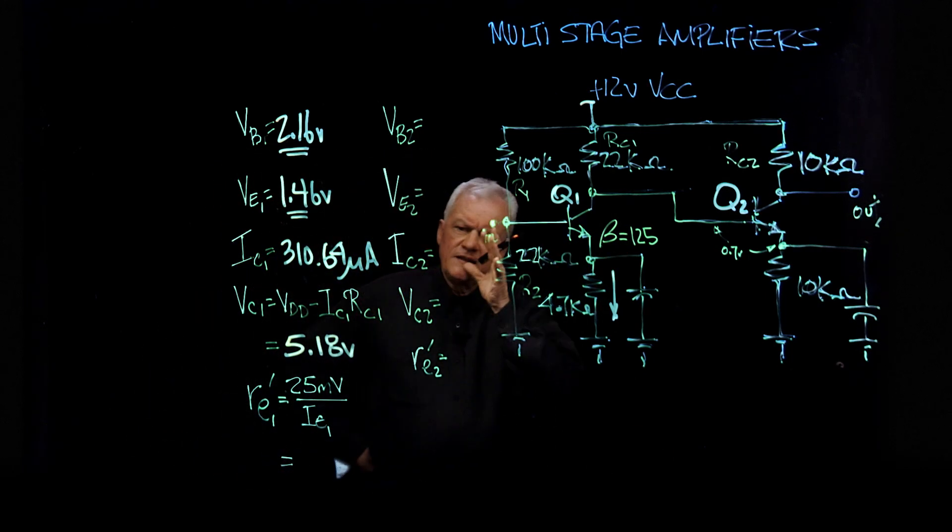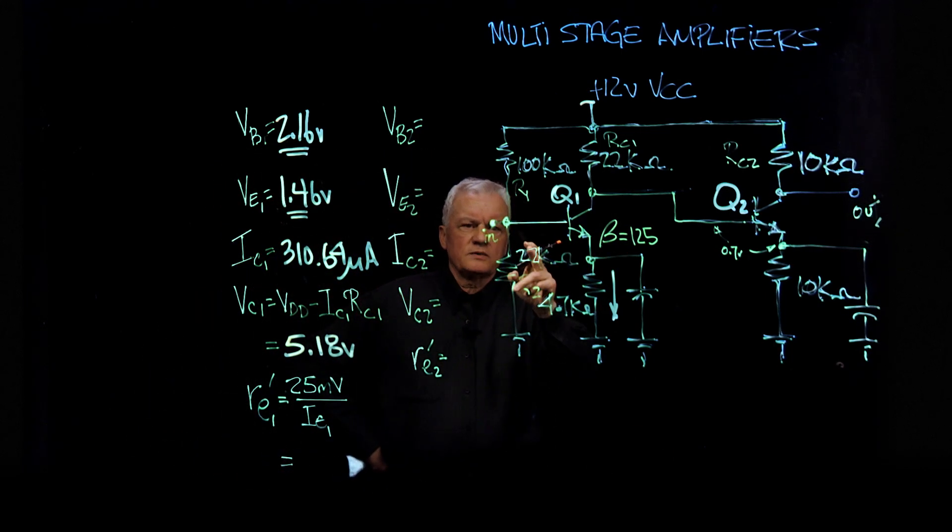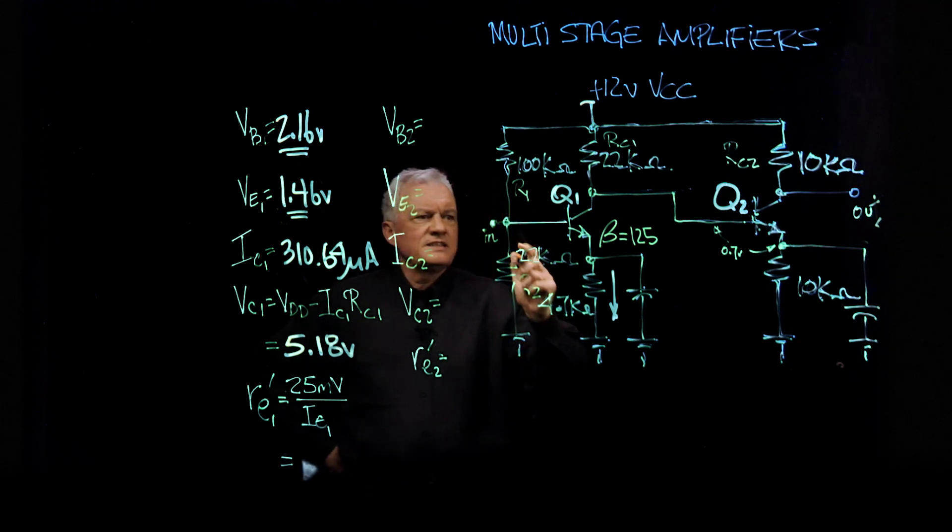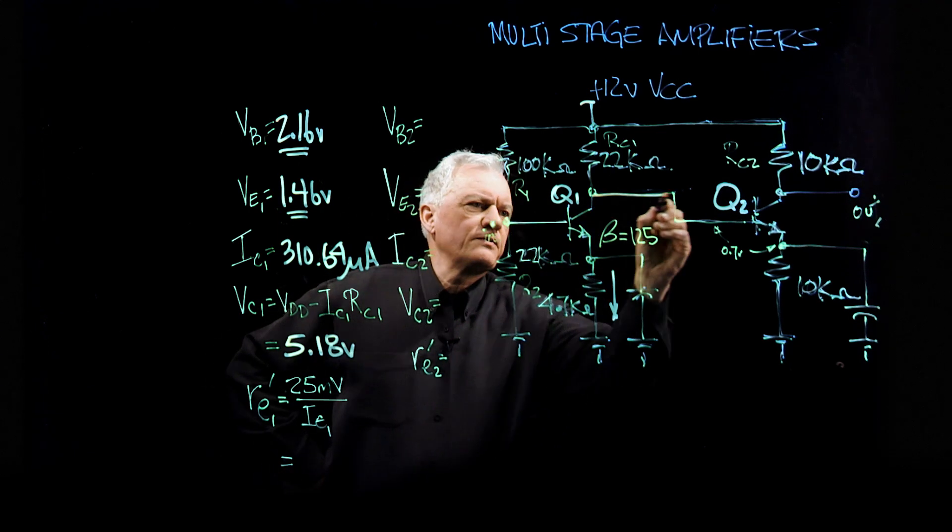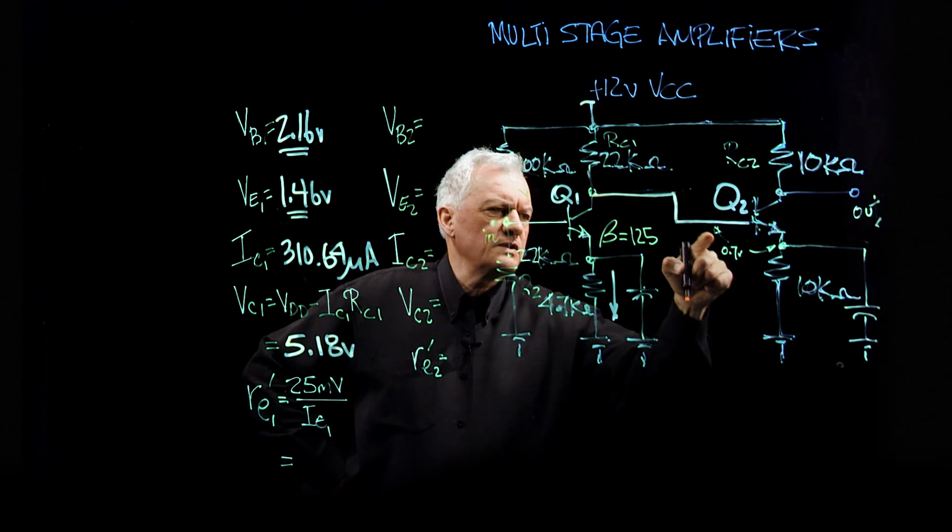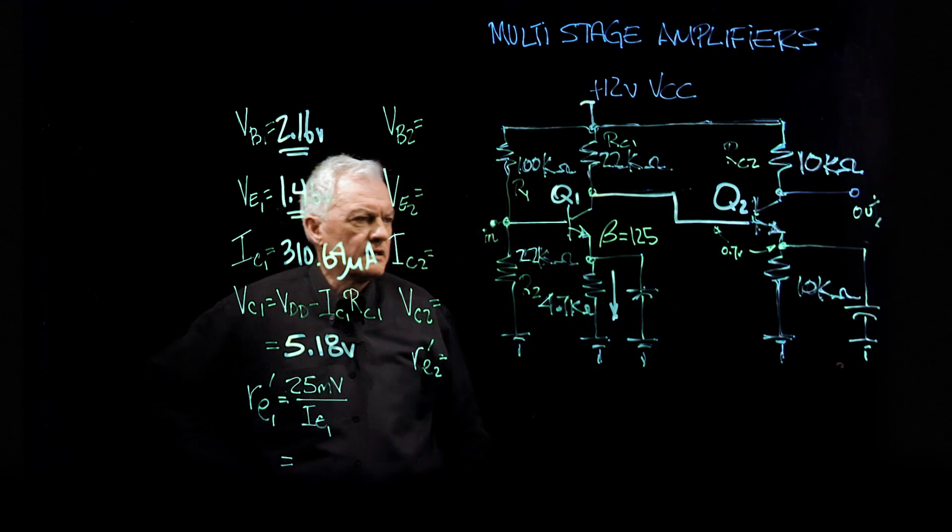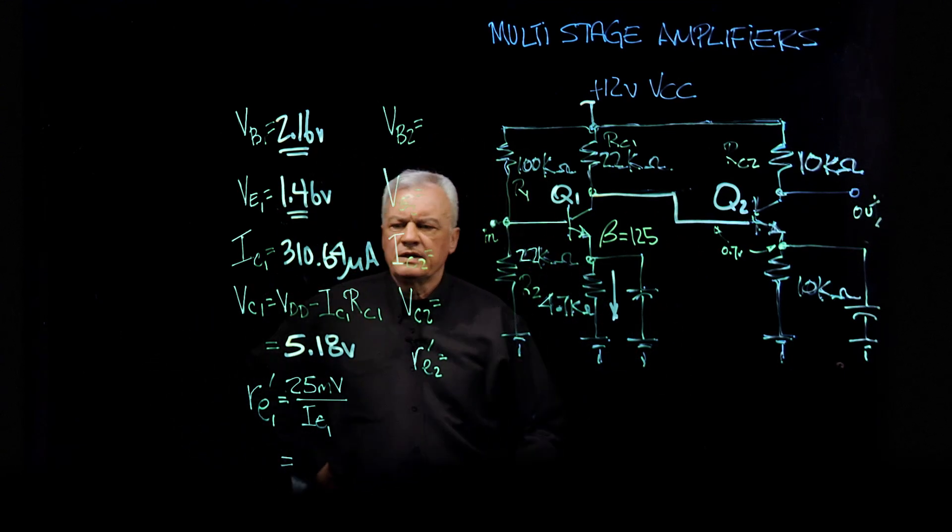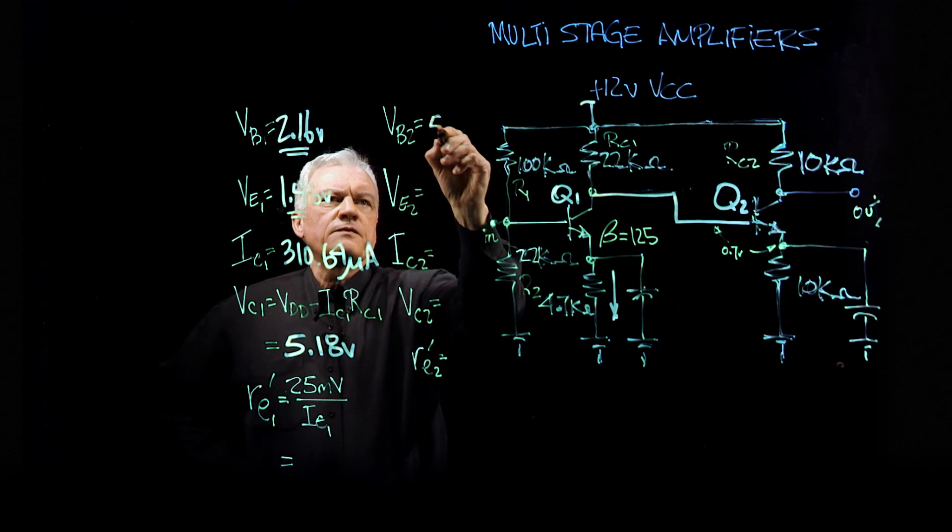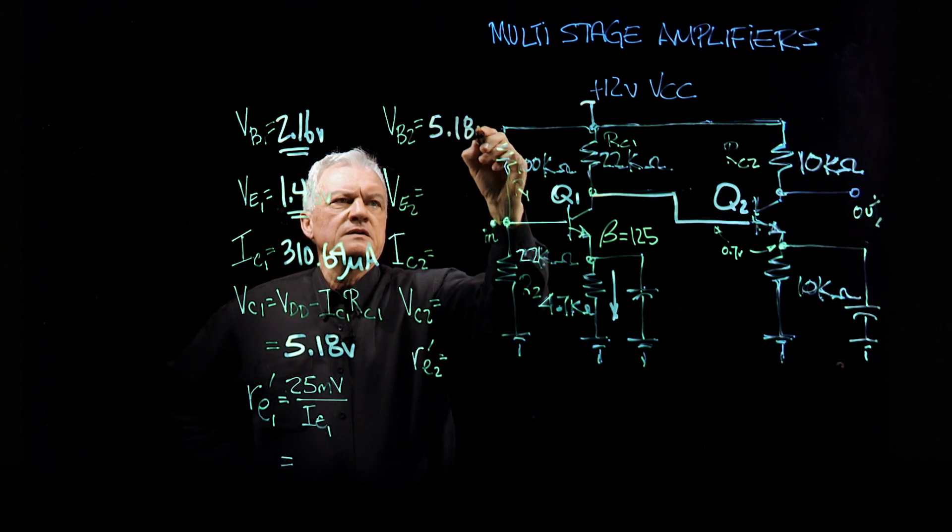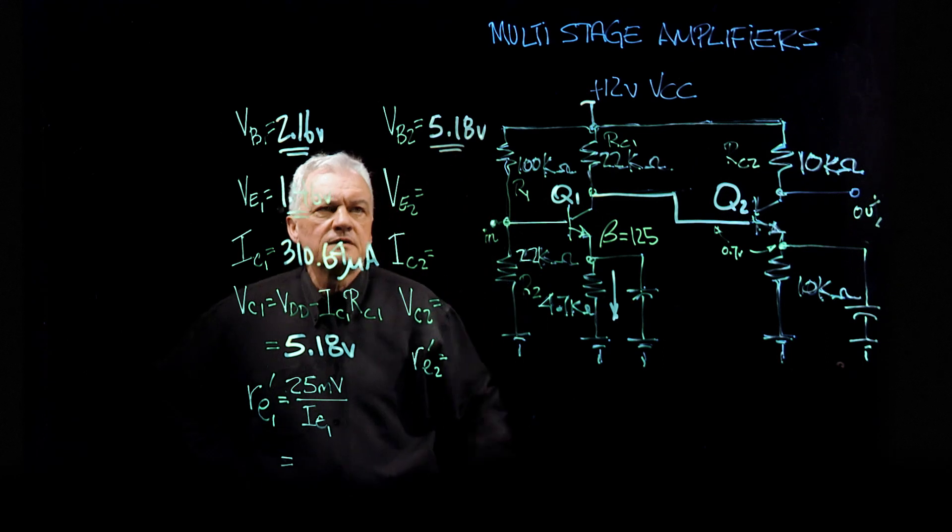So if you have 5.18 volts on the collector and it is a direct coupled amplifier, then the voltage on the base of transistor number two is going to be 5.18 volts. Easy breezy.